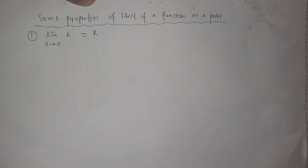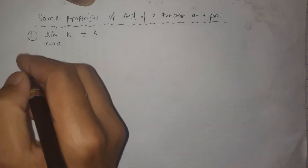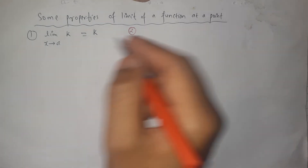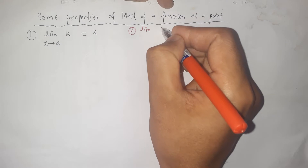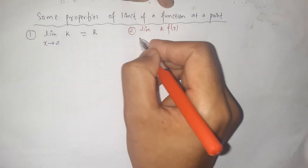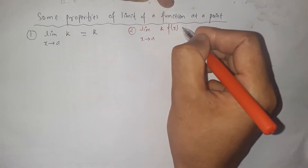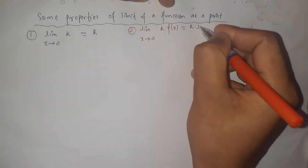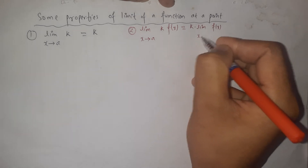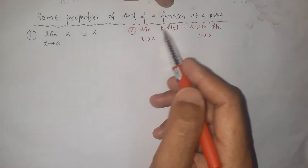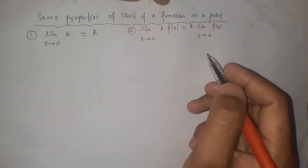The second property is about the limit of a function multiplied by a constant number K. The limit of K times F(x) when X approaches to a is equal to K times the limit of F(x) when X approaches to a. So the constant K can be factored out of the limit. This is the constant multiple law.